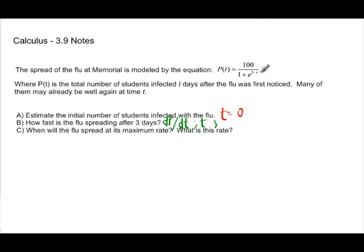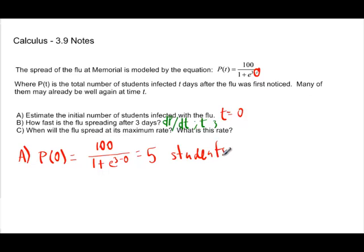But anyway, the initial number of kids infected with the flu, we're going to just take this t right here, and we're going to make it a zero. So P of zero, not P of three, P of zero. And we're going to have 100 over 1 plus e to the third power minus zero. And when you go ahead and punch this into your calculator, the nearest whole number when you punch all that in is going to be... oh sorry, five. My big beefy fingers. So when you punch this into your calculator, you're going to get five. So here's A right here. There are five students infected on day one.